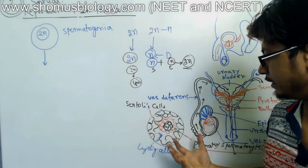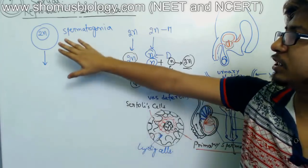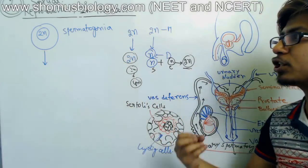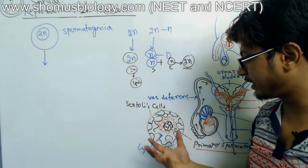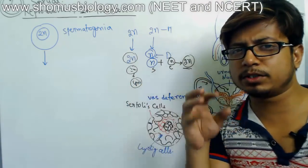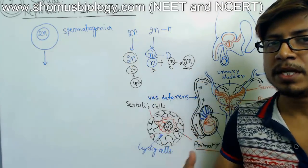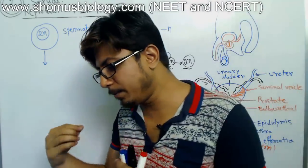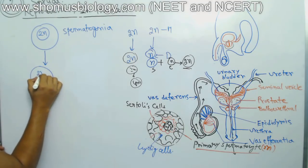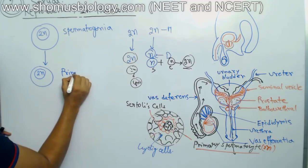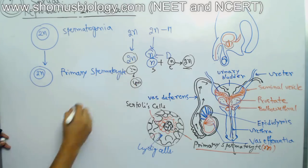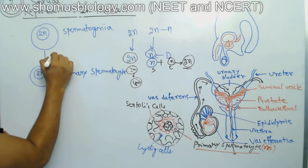From birth, all cells present in the testis inside the seminiferous tubule are spermatogonia — they are not mature enough to produce sperm. They only receive the maturation signal through the secretion of androgens, or male hormones, secreted by the Leydig cells present in the interstitial fluid of the seminiferous tubule. Once they receive these androgen signals, the spermatogonium differentiates into the primary progenitor cell known as the primary spermatocyte, which is a mature 2n cell.